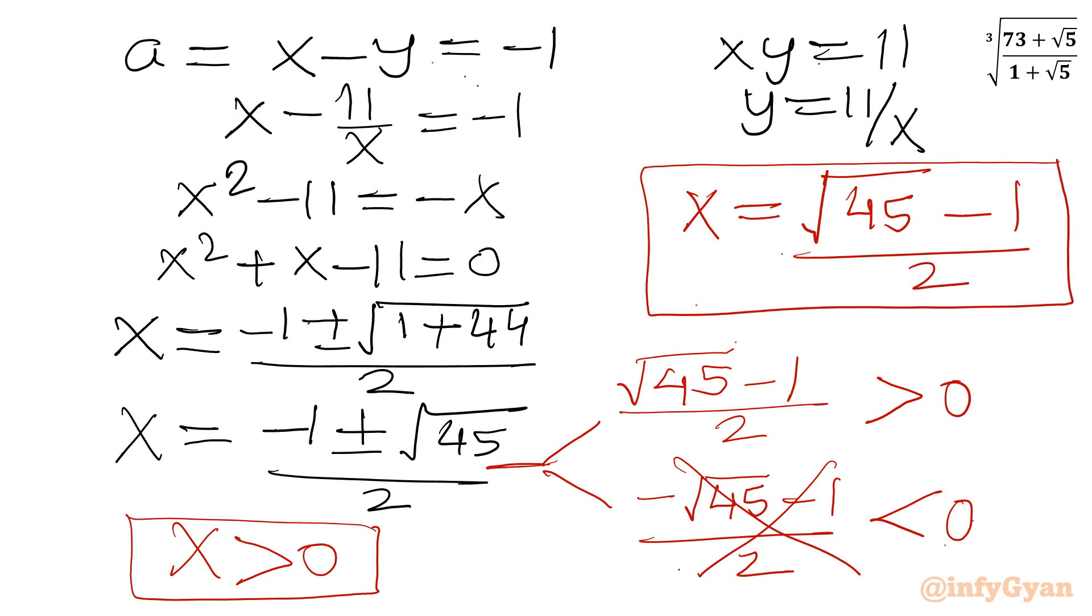Now Method number 2. Method 2 is based on Simon's favorite factoring trick. Let me write our x cube first. So x cube was 18 root 5 minus 17. Now I will factor 18. So I can write x cube will be equal to 6 times 3 root 5 minus 17.